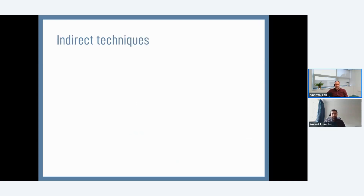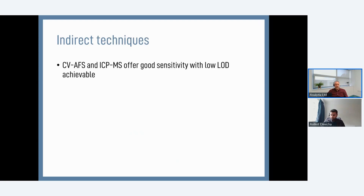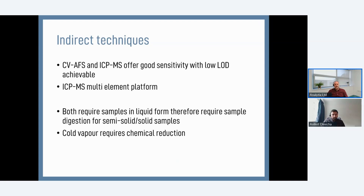The benefits of indirect techniques like cold vapour and ICP-MS for detecting mercury are that they are very sensitive, achieving very low limits of detection — sub-PPT — which is suitable for things like drinking water and clean waters. ICP-MS has the added benefit of being a multi-element platform, so if you're looking at a full suite of metals in a particular matrix, ICP-MS can cover them all at once. However, the limitation of these indirect techniques is that they require the sample to be in liquid form.